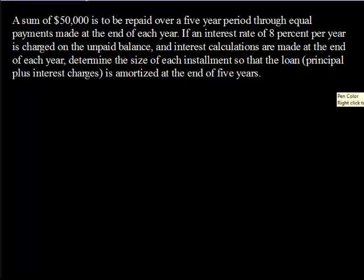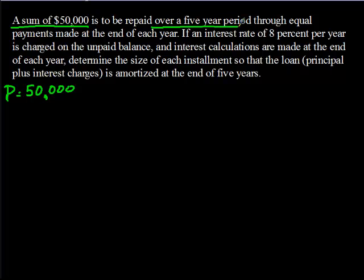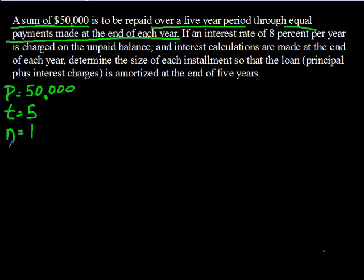Now we need to identify all the information from the problem. We know we have a sum of $50,000, so capital P equals $50,000. It's going to be repaid over a 5-year period, so t equals 5. Through equal payments made at the end of each year means n equals 1 — one payment per year. The interest rate is 8% per year, so r equals 0.08 as a decimal.